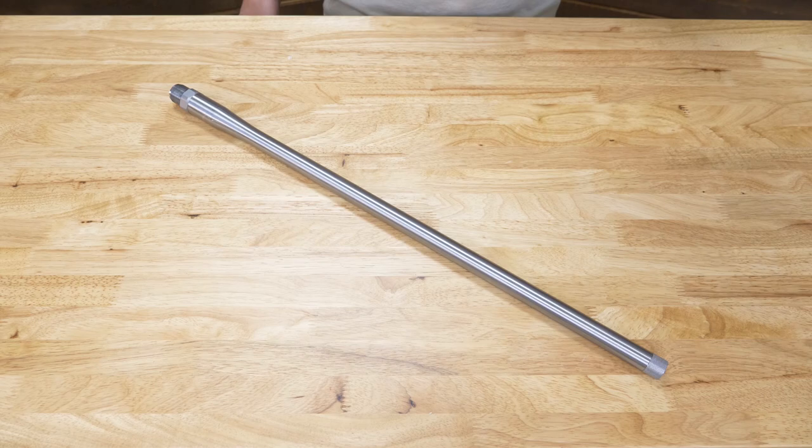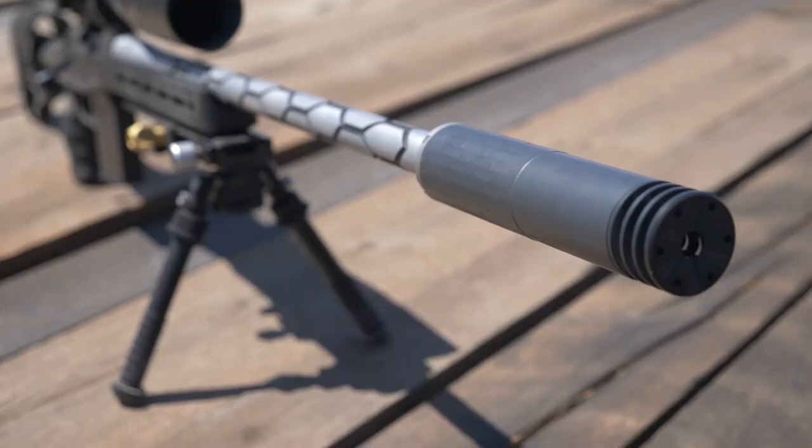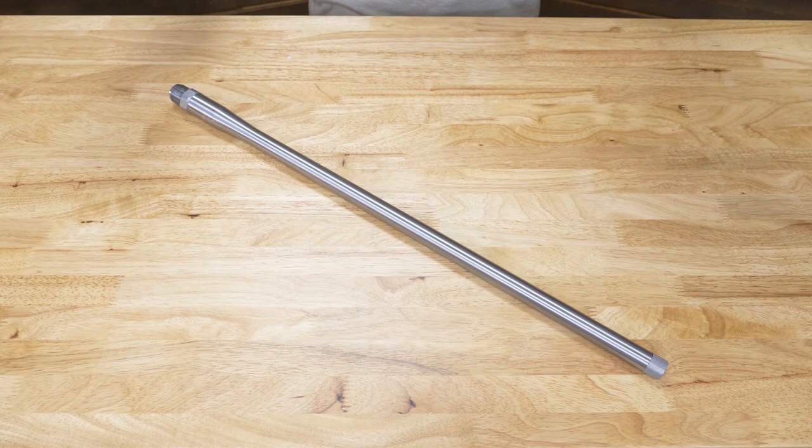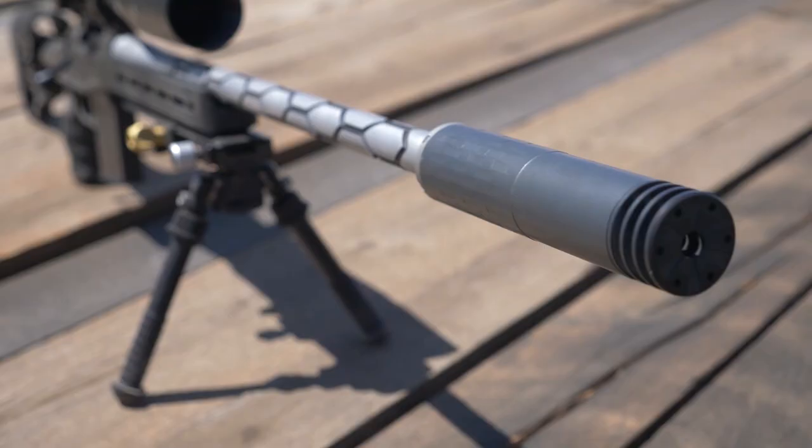We use the taperless contours on virtually all of our prototype or test barrels due to the limitless flute design potential, as well as having the same barrel wall thickness from 5 inches all the way to the muzzle, which we believe yields higher accuracy potential.